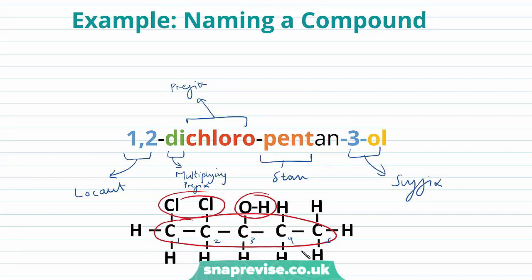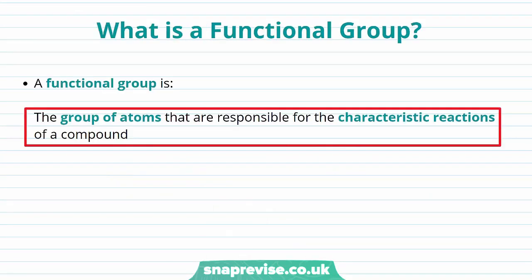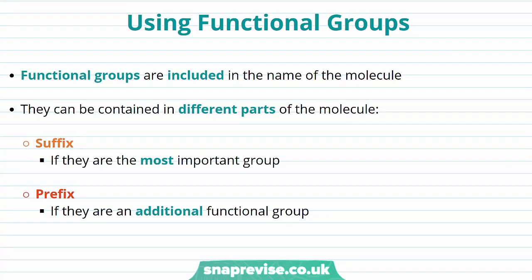We could have started with a name and drawn out the structure, or we could have started with a structure and broken it down to find the name — you need to be able to do both. Now, a functional group is a group of atoms responsible for the characteristic reactions of a compound. Functional groups can be used within the name of our compounds. If they are the most important group, they're contained in the suffix. If they're an additional functional group, they're contained in the prefix, before the stem. Let's take a look at different functional groups and how their name changes depending on whether they're used in the suffix or prefix.